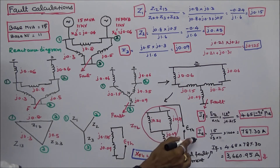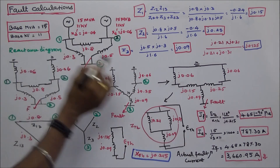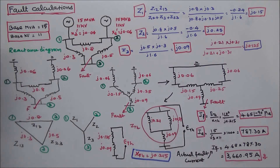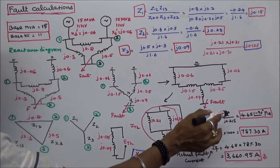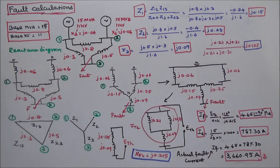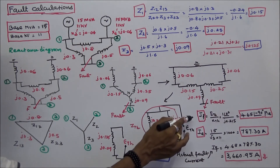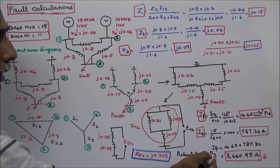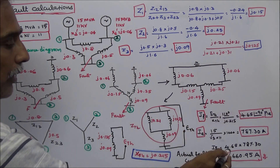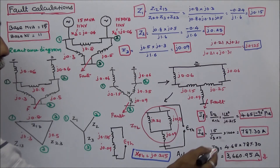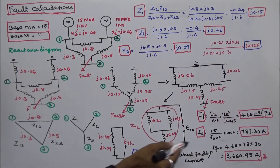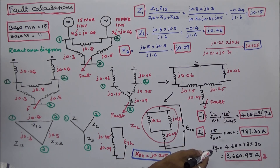Next, the actual base current is calculated as 15 MVA divided by root 3 multiplied by 11 kV, which equals 787.30 amps. Once the per unit fault current and base current are known, the actual fault current IF equals the per unit fault current multiplied by the base current: 4.65 multiplied by 787.30, giving an actual fault current of 3660.95 amps.